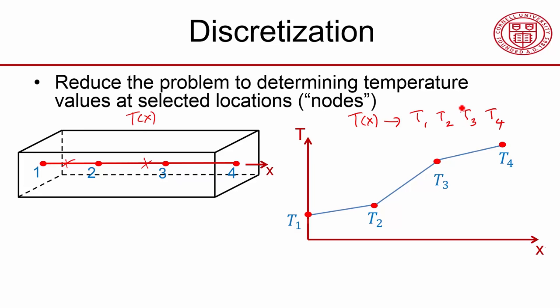And in terms of terminology, these are called nodes, that's what I have here. And these are called elements. So I've divided my domain into three elements. And I have four nodes.